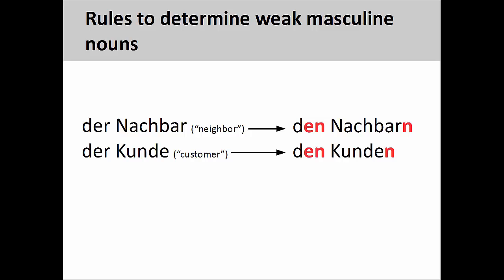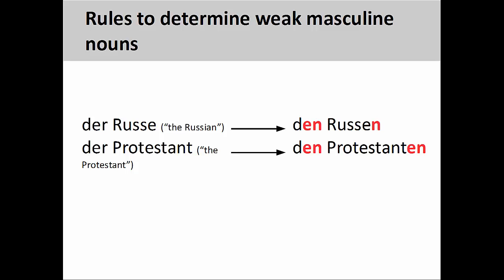First, some nouns indicating male beings, such as der Nachbar — the neighbor — and der Kunde — the customer — may be weak masculine nouns. Second, masculine nouns indicating nationality or religious affiliation, such as der Russe — the Russian — and der Protestant — the Protestant — may be weak masculine nouns.